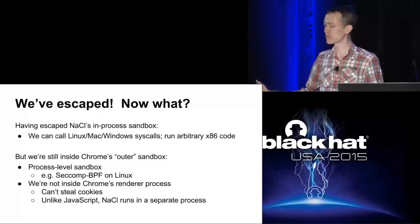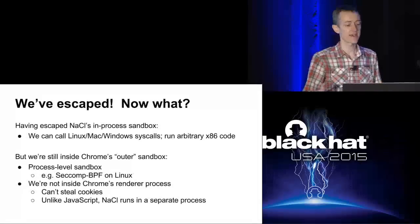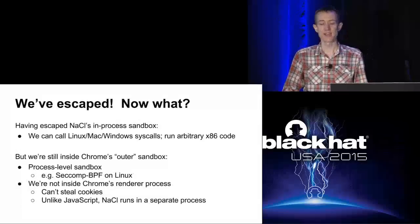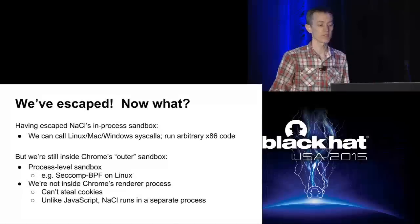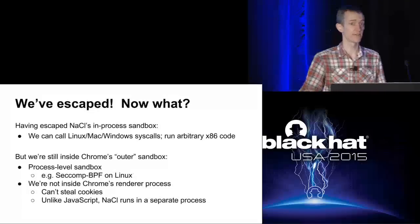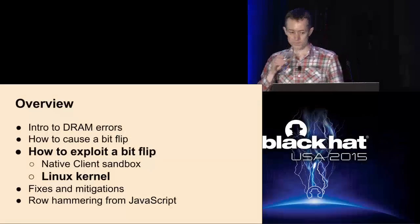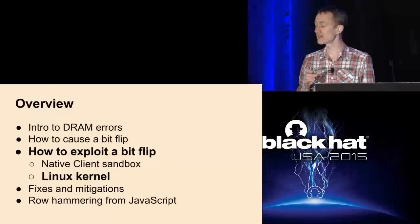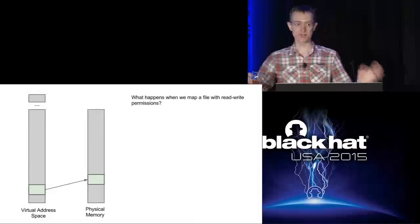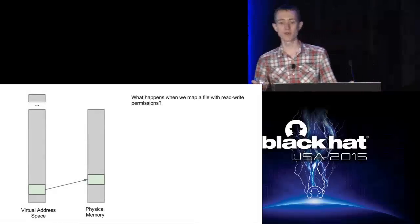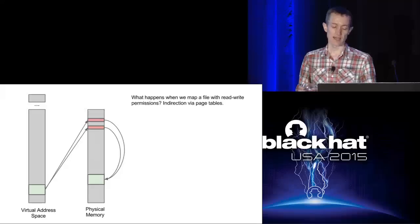So I've described how you can escape the NaCl sandbox. Once you've done that, there's actually not an awful lot you can do because you're still inside a process-level sandbox - but you could try escaping from the process-level sandbox too. That's what the next exploit does. In this case the data structure we attack is page tables - the data structure that hardware uses for mapping a processor's virtual addresses to the machine's physical addresses. They're set up by the kernel.